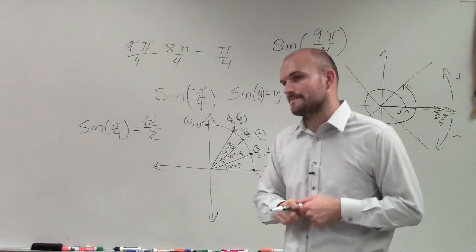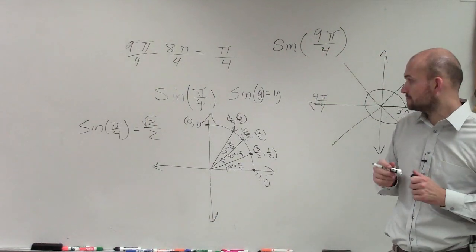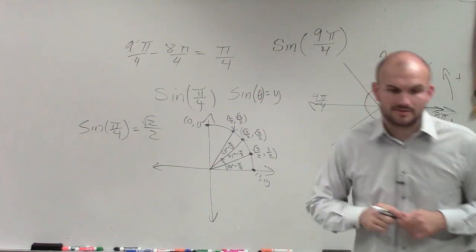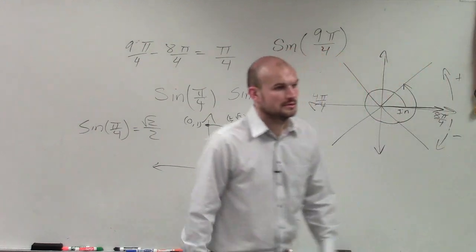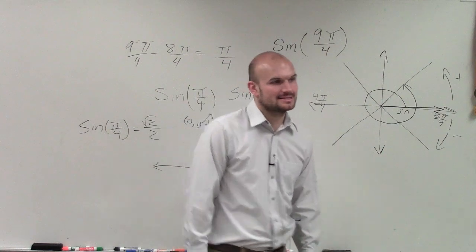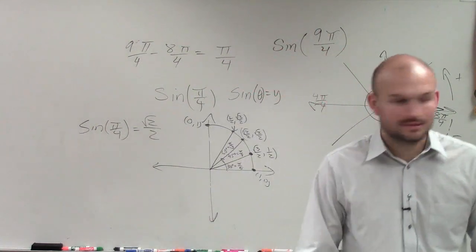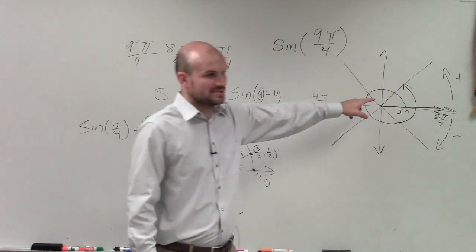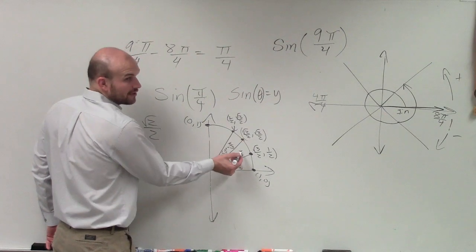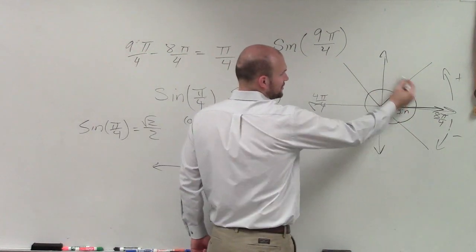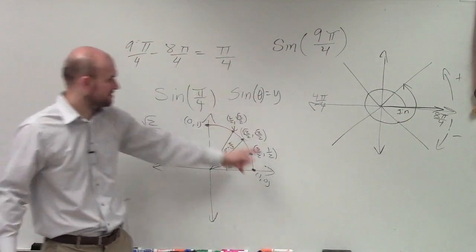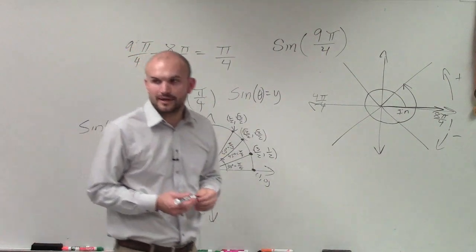Student asks: Is this only for sine? No, I gave you all the values. Another student asks how did I know that point was there? Because from here to here is π over 4. When I wrap around my circle and subtract, I get π fourths. That's how I knew that's where it's at.